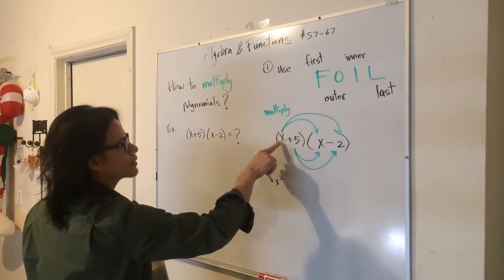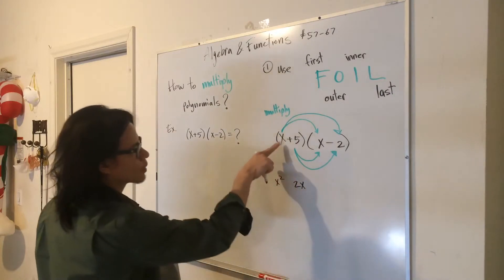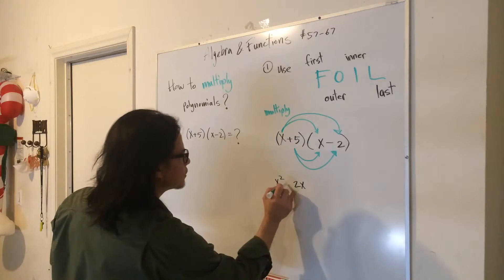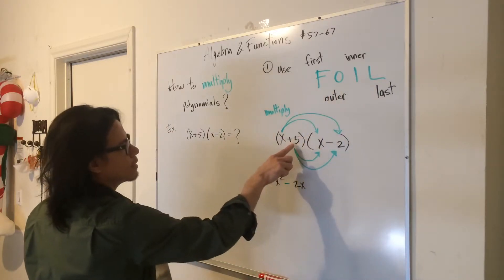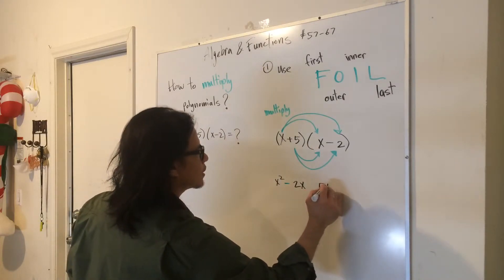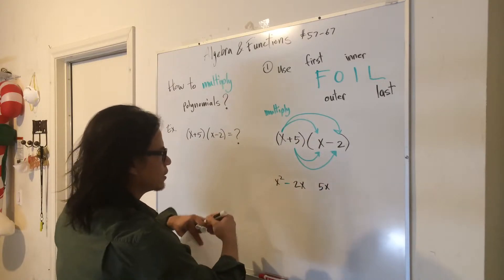Outer, you have x times 2 is 2x. Positive times negative is negative. The inner term, 5 times x is 5x. Positive times positive is positive.